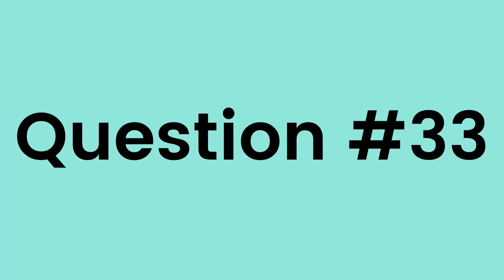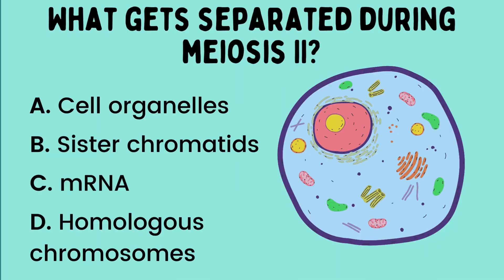Question number 33. What gets separated during meiosis 2?